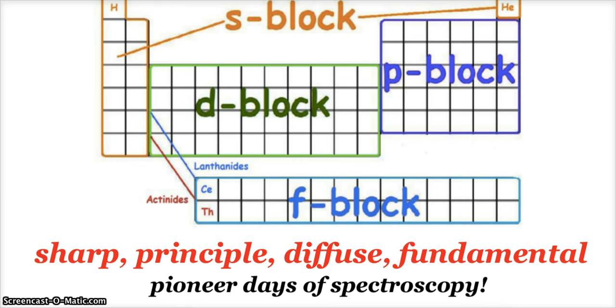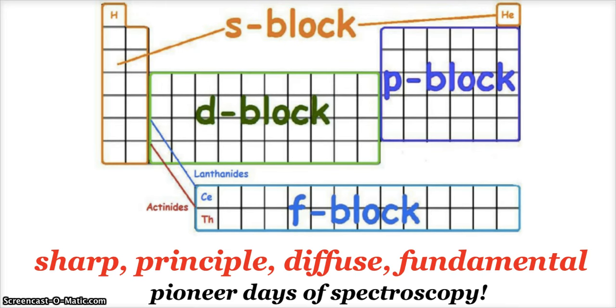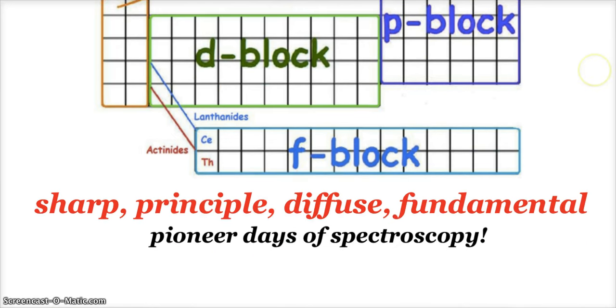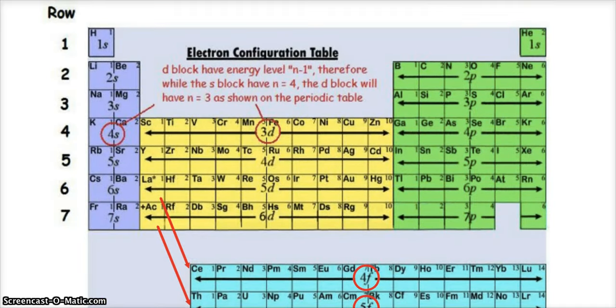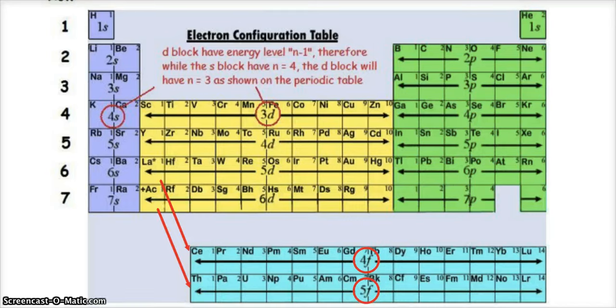These blocks are defined based on what kind of orbital the last electron is going into. Our first two groups have their last electron in an s orbital, our last six groups on the right have their last electron in a p orbital, and then we have D and F for the middle portions. You can draw diagrams and try to remember the order of filling, but just read the periodic table.